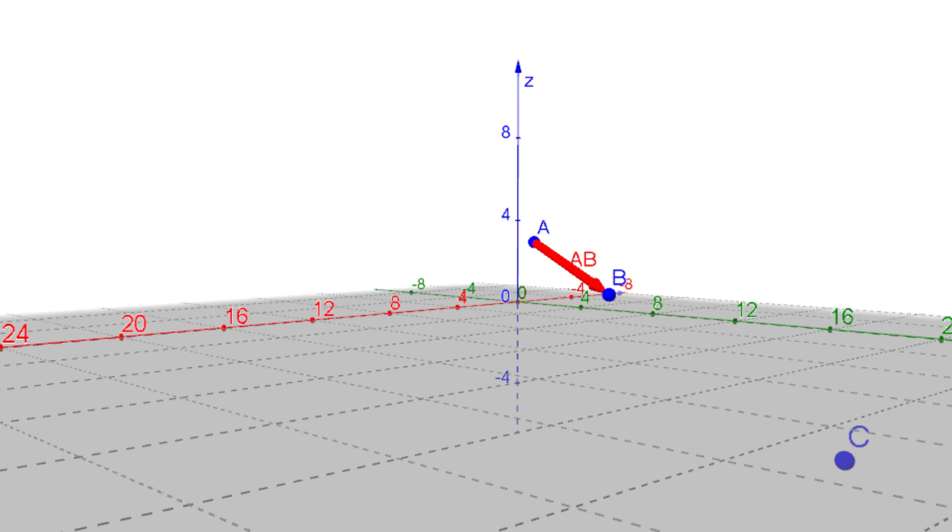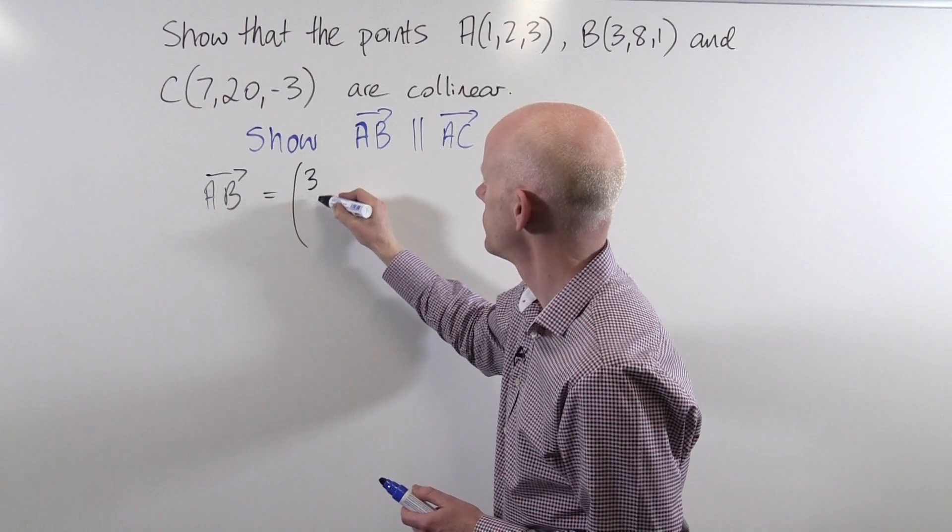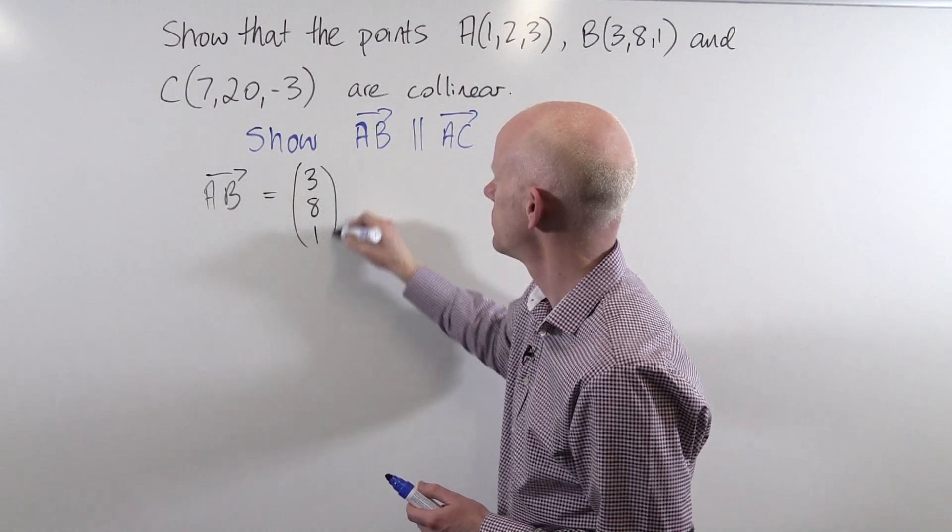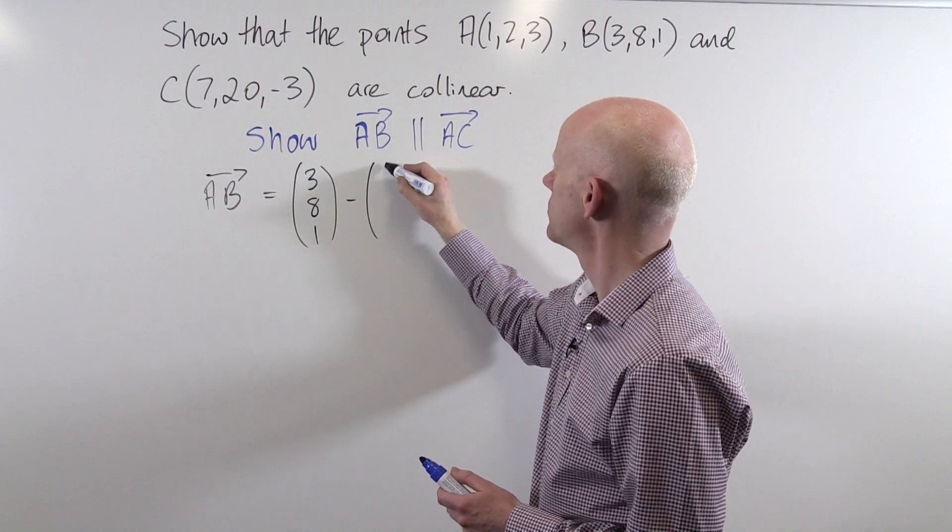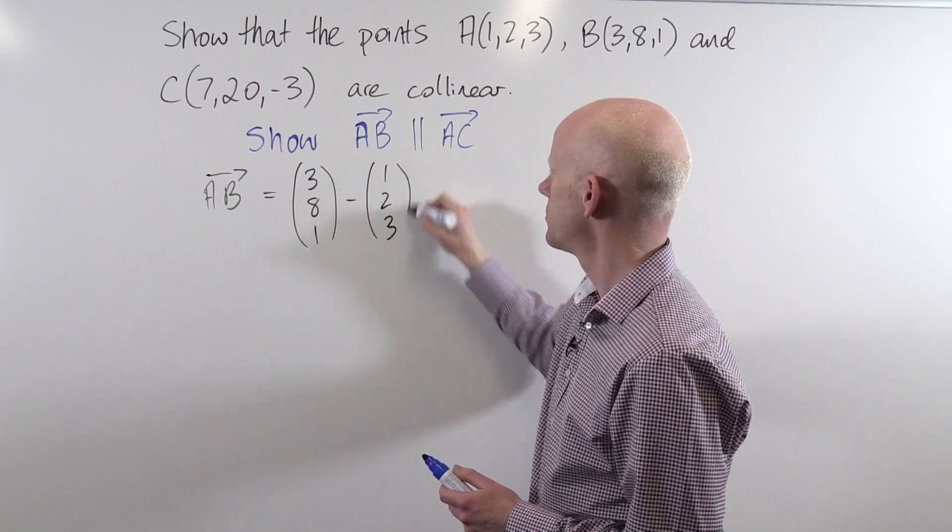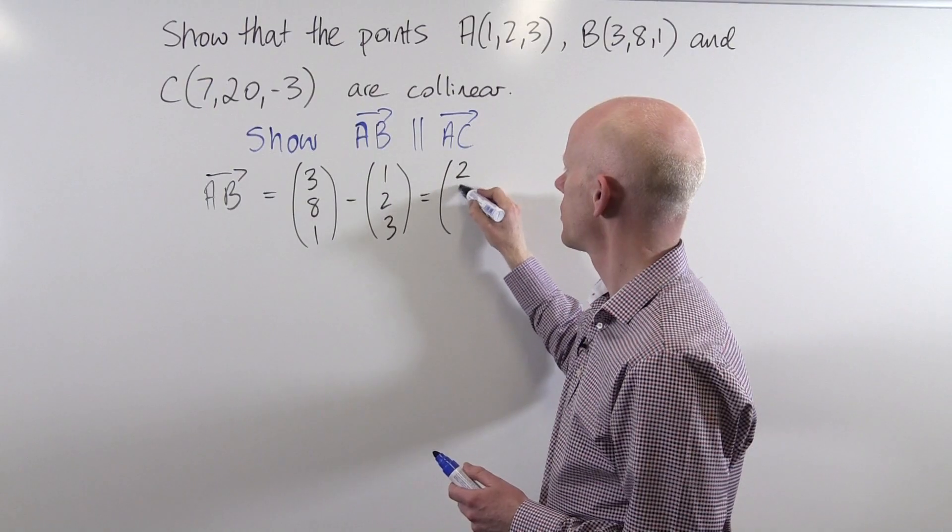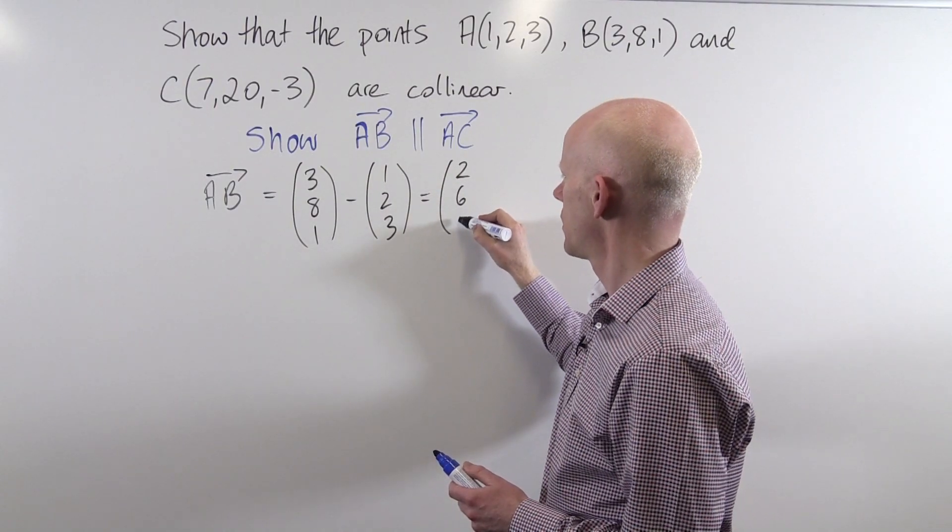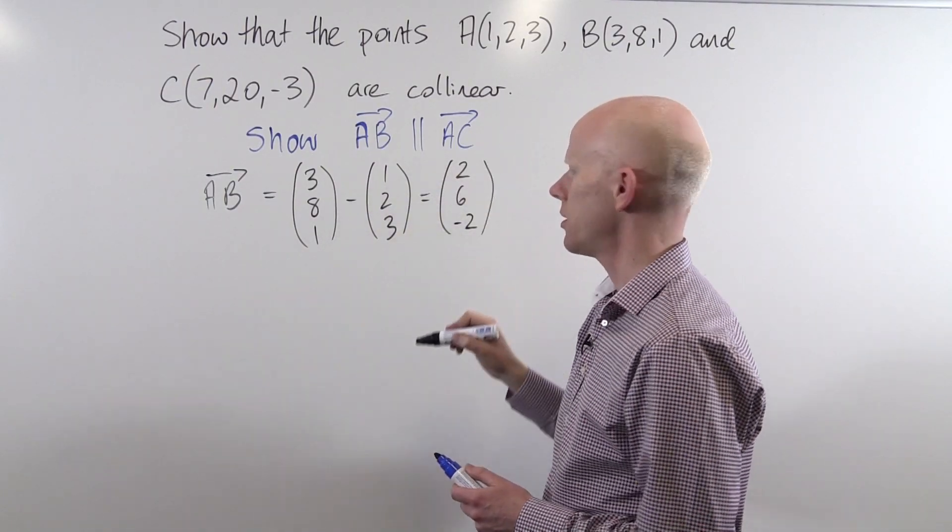The geometric vector AB is the difference between the vector B and A, which is 2, 6, negative 2.